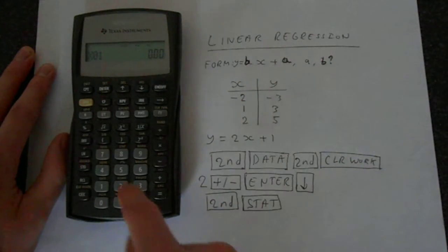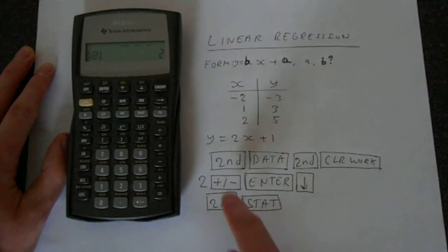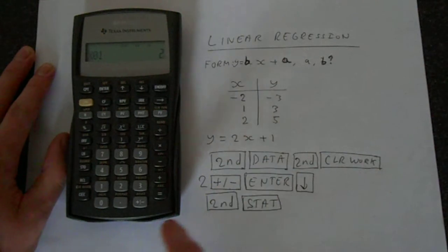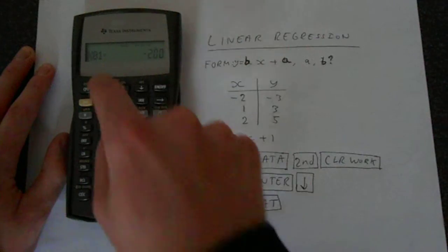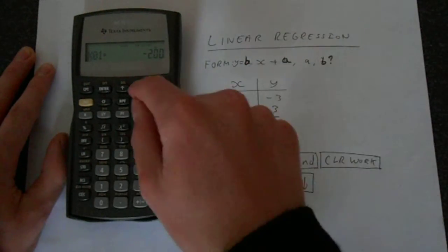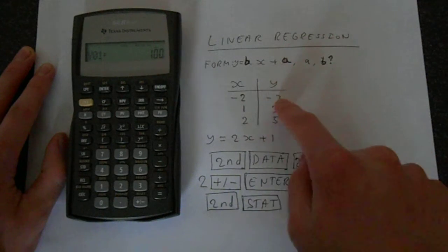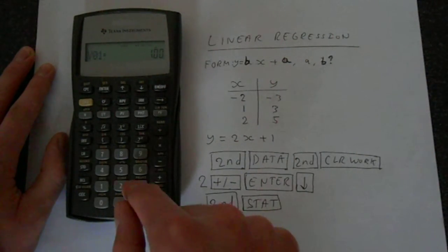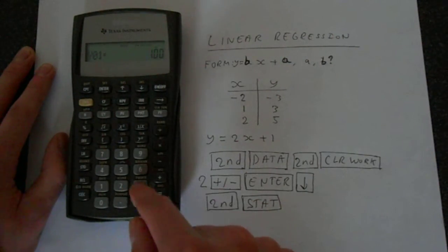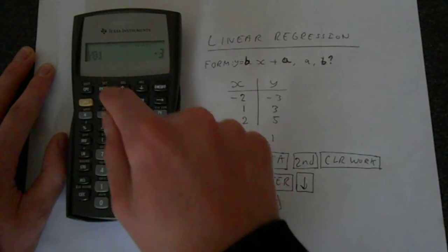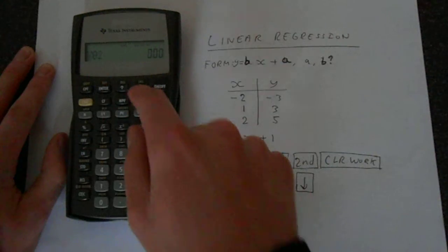Now let's enter the data. We've got 2, then to get a negative on this calculator we'll use the plus minus button, which is down in this bit here. Then we press enter and that saves it to memory. Then we go down and put the rest of it in. We're going to want minus 3, so we've got 3, then we want that negative, then we do enter, then we go down.